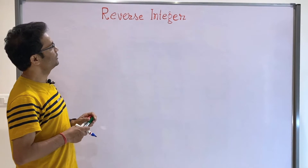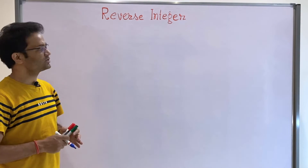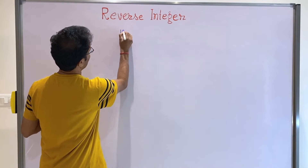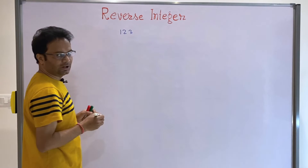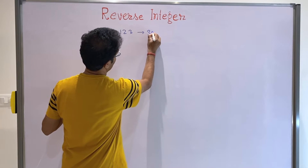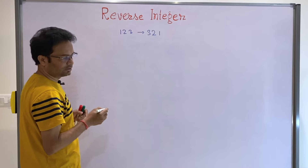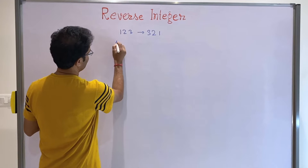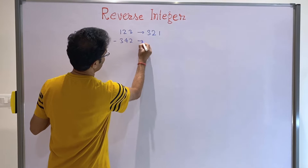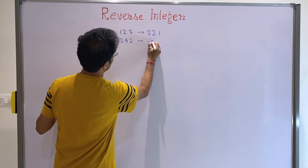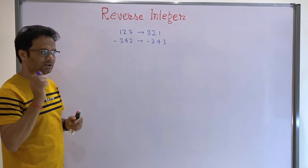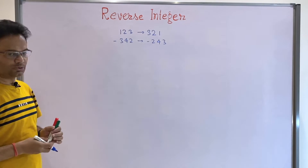We are going to understand one interesting question. If you have been given one integer, suppose 1, 2, 3, and you have to reverse it, how can you do that? Or suppose you have a negative number, suppose minus 3, 4, 2 — you should make it 2, 4, 3. So this is the problem — how are you going to solve that?